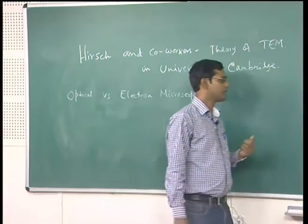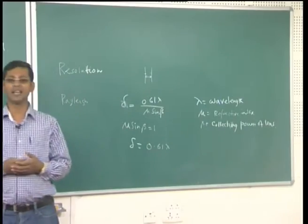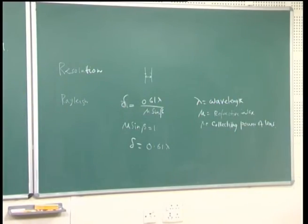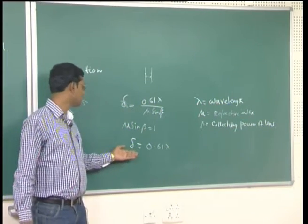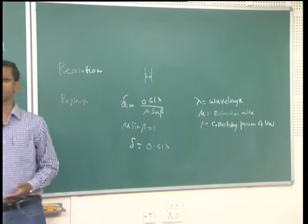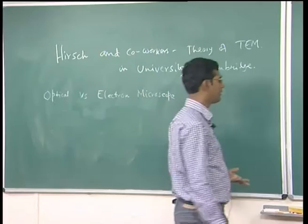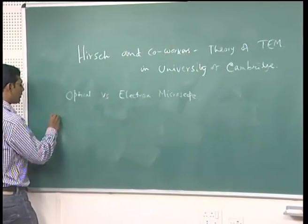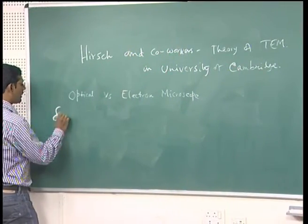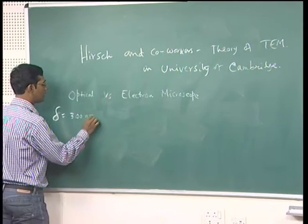If we consider normal light used in a microscope — if we consider green light with a wavelength of about 550 nanometers — the resolution power of the light microscope is approximately 300 nanometers. So for an optical microscope, we can have a resolution of approximately 300 nanometers.